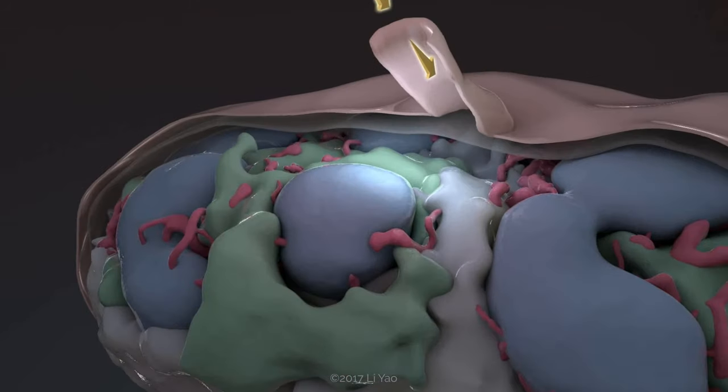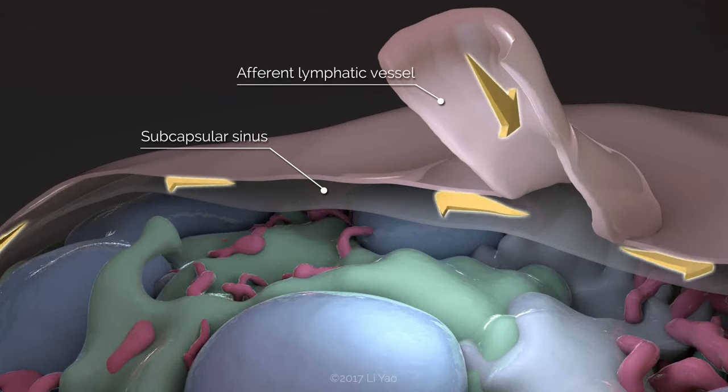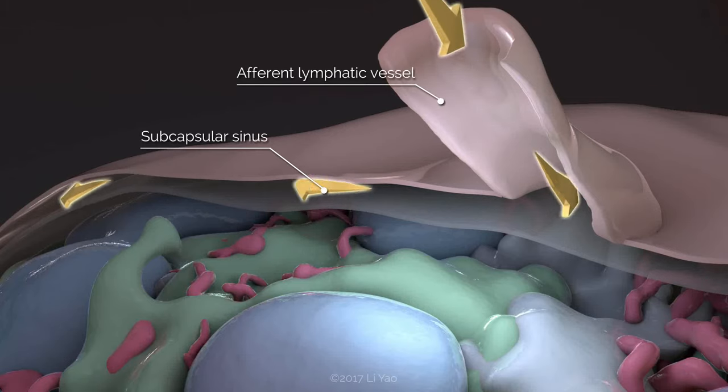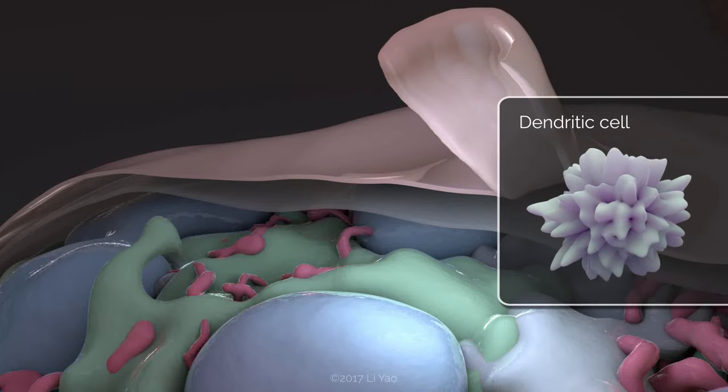Lymph, which is drained from interstitial fluid, enters the subcapsular sinus through the afferent lymphatic vessels. It carries antigens in free form and in the antigen-presenting dendritic cells.